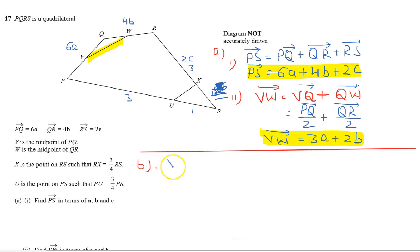Part B is to show that VW is parallel to UX. VW we have already calculated, let's try to find UX. UX is equal to US plus SX. US is the part of PS.